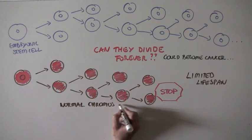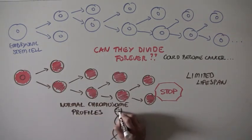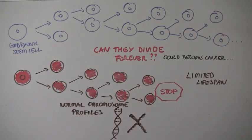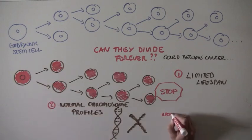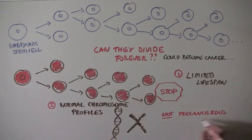They also had perfectly normal chromosomes, or DNA profiles. So these two aspects of their biology suggest that they are probably not precancerous cells, that tend to have a lot of changes at the level of the DNA.